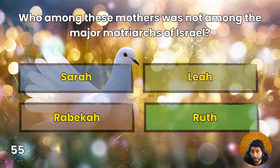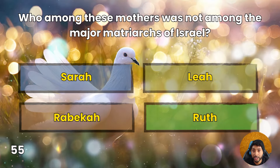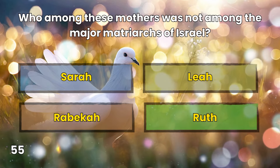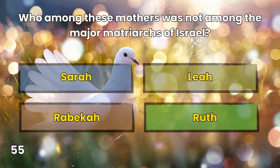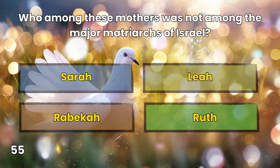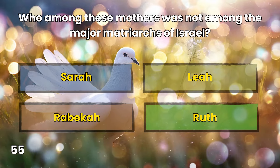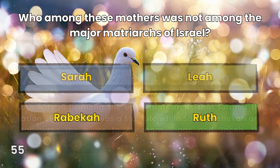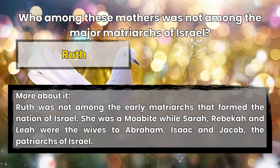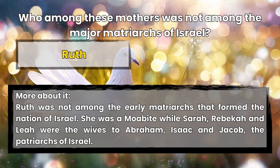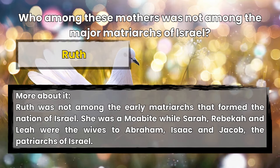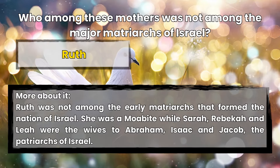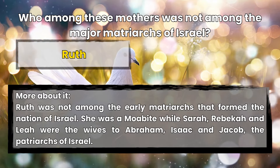Question 55: Who among these mothers was not among the major matriarchs of Israel? Sarah, Leah, Rebekah, or Ruth? Ruth. Ruth was not among the early matriarchs that formed the nation of Israel. She was a Moabite, while Sarah, Rebekah, and Leah were the wives of Abraham, Isaac, and Jacob, the patriarchs of Israel.